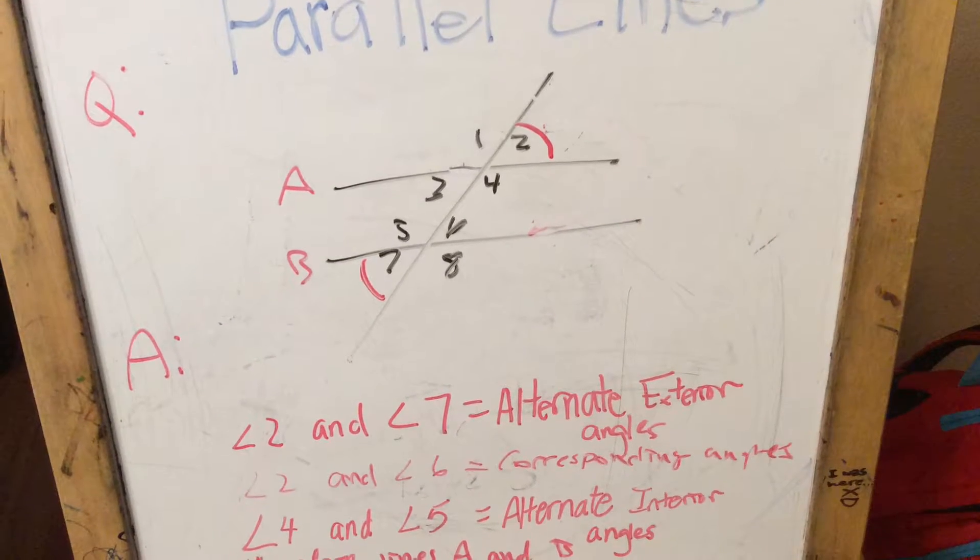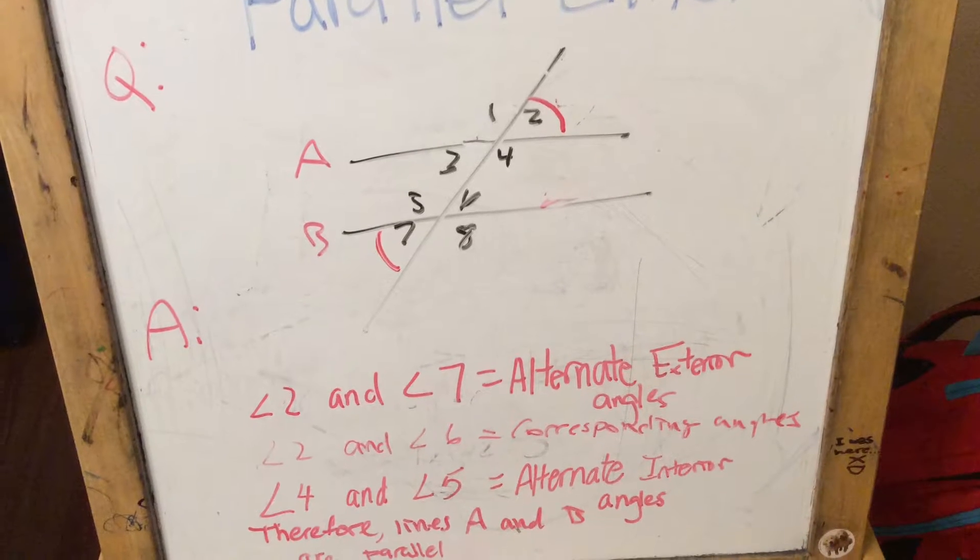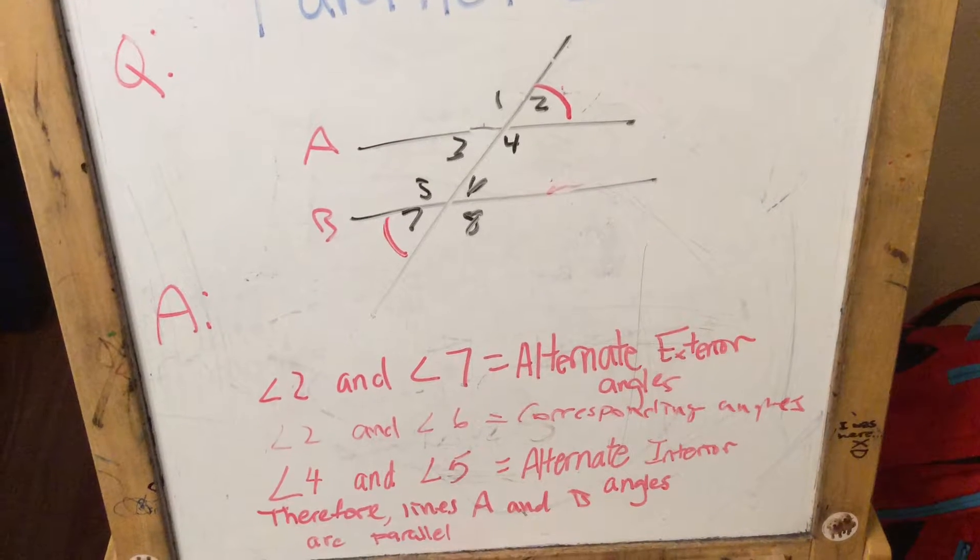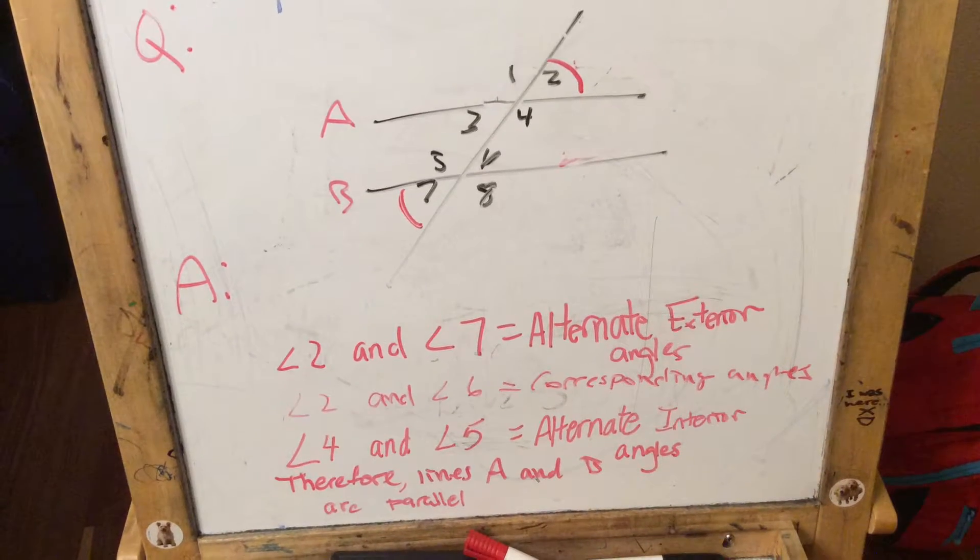Angle 2 and angle 7 are alternate exterior angles because, as you can see, the two angles are outside of the two lines that are getting intersected by the transversal.